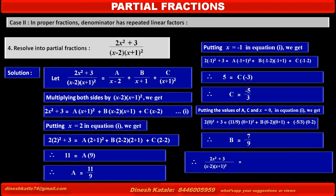Therefore, the given fraction (2x² + 3) / [(x - 2)(x + 1)²] is equal to 11/[9(x - 2)] + 7/[9(x + 1)] - 5/[3(x + 1)²]. For better understanding, take a pause here and try to solve this problem again in your notebook without copying.